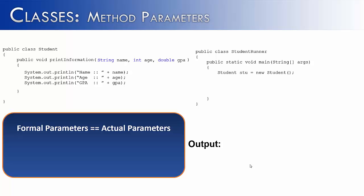In this next part, I'd like to talk about how formal and actual parameters must be the same. I've created two classes — the Student class and the StudentRunner class. Inside the Student class, we have a method called printInformation. It's a simple method that takes in three variables — name, age, and GPA — and prints them out. Over in the runner, we've created an object of the Student class, and I want to show you three ways in which formal and actual parameters have to be the same.